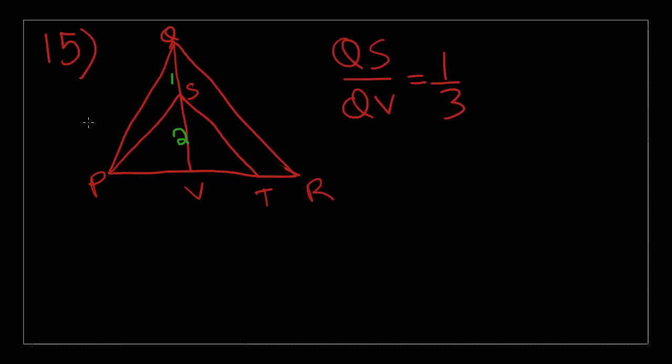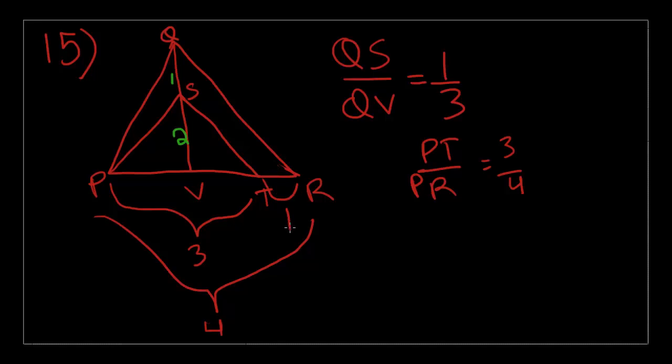The next proportion is PT over PR is equal to 3 over 4. Alright, so PT is equal to 3. And since PR is equal to 4, then this bit over here is equal to 1. I should have used green. I need to be consistent. Alright, 3 and 1, so at least you can see what the measurements are.